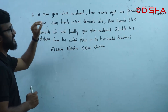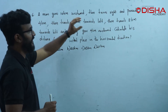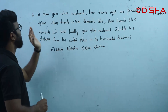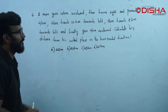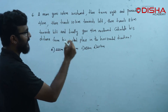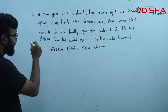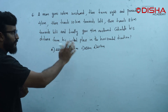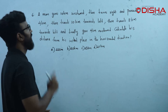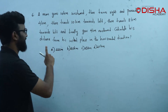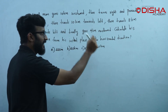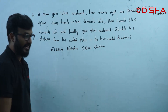A man goes 10 km westward, then turns right and proceeds 4 km, then travels 10 km towards left, then travels 8 km towards left, and finally goes 4 km northward. Calculate his distance from his initial place in the horizontal direction.